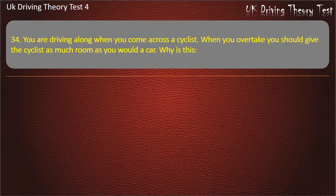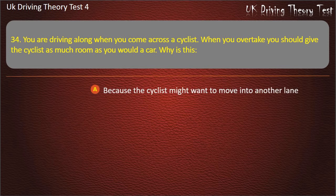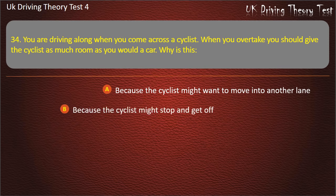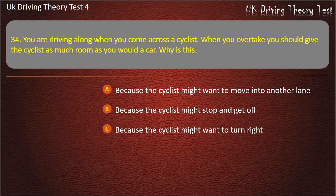Question 34. You are driving along when you come across a cyclist. When you overtake, you should give the cyclist as much room as you would a car. Why is this? Because the cyclist might want to move into another lane; because the cyclist might stop and get off; because the cyclist might want to turn right; or because the cyclist might swerve. Answer: Because the cyclist might swerve.